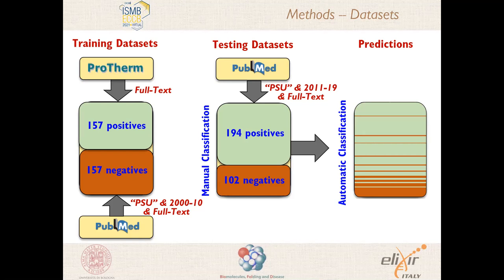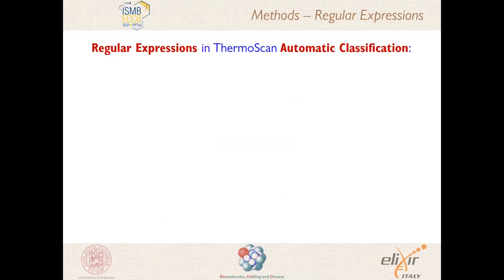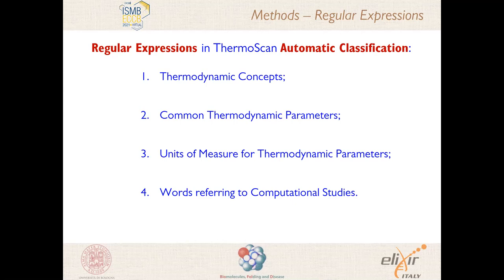At the core of this automatic classification are a few regular expressions. We search for four classes of words: namely thermodynamic concepts, common thermodynamic parameters, units of measure for thermodynamic parameters, and words referring to computational studies. The first three classes increase the score, while the last class decreases it, since these words tend to occur more often in articles containing simulated data rather than experimental ones.